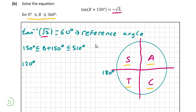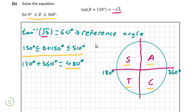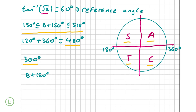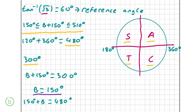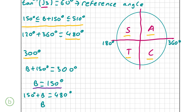Since 120° is not within our range for b plus 150°, we add 360° to get 480°. For the fourth quadrant, we take 360° minus the reference angle of 60°, giving 300°, which is within our range. Now solving for b: from b + 150 = 300, we subtract 150 to get b = 150°. From b + 150 = 480, we subtract 150 to get b = 330°. These are our two answers.